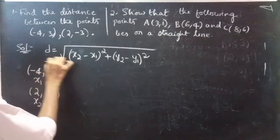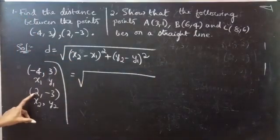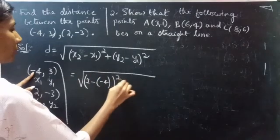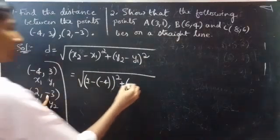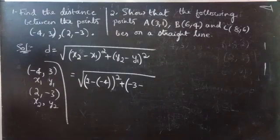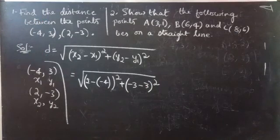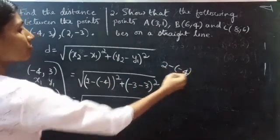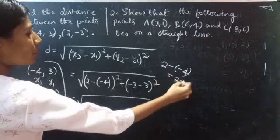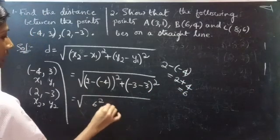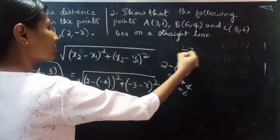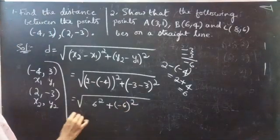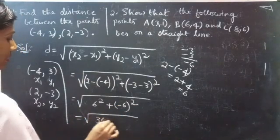So this equals to square root of (x2 minus of minus 4) whole square plus (y2 minus y1, that is minus 3 minus 3) whole square. This equals to square root of (2 minus of minus 4): 2 plus 4 equals 6. 6 square plus (minus 3 minus 3) equals minus 6, and minus 6 whole square.